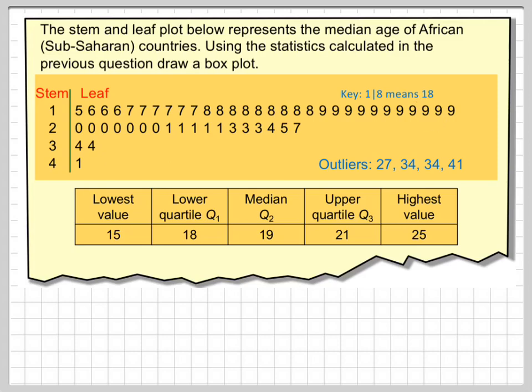When I did my calculations from this I got that the lowest value is 15. The highest value is 25 because I determined that 27, 34, 34 and 41 were outliers. We calculated the median to be 19, the lower quartile to be 18 and the upper quartile to be 21.